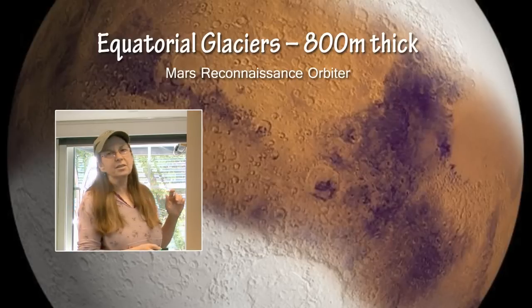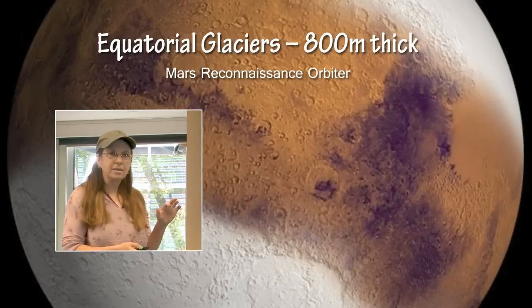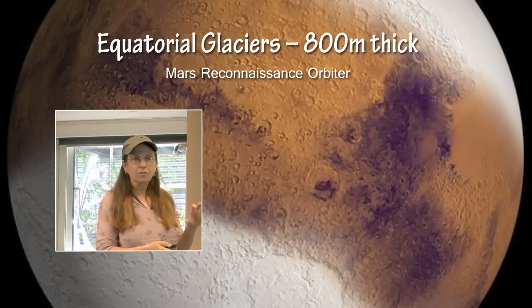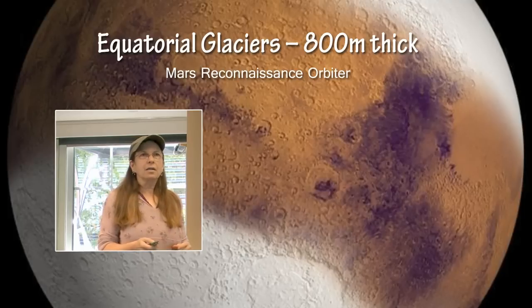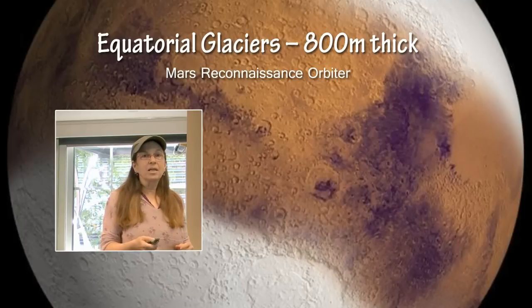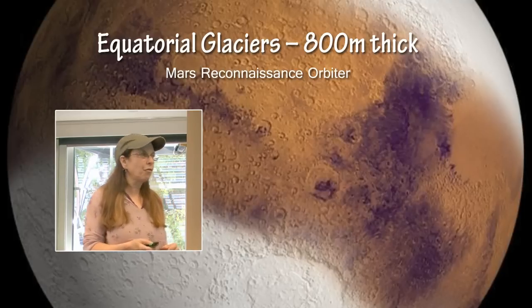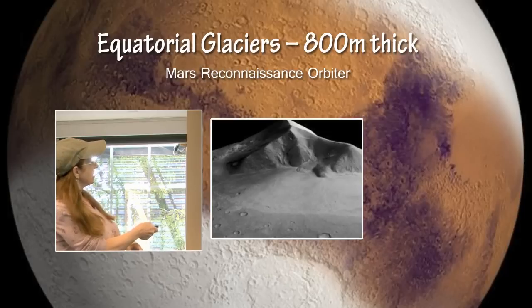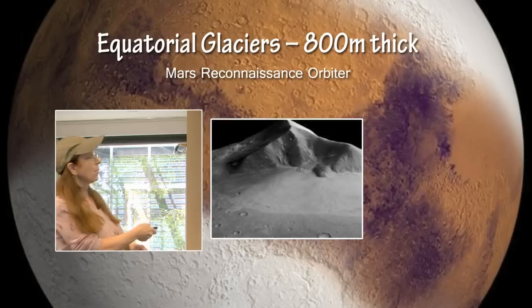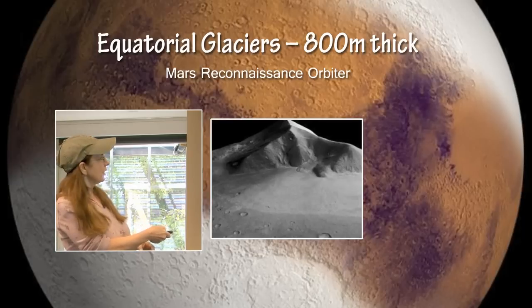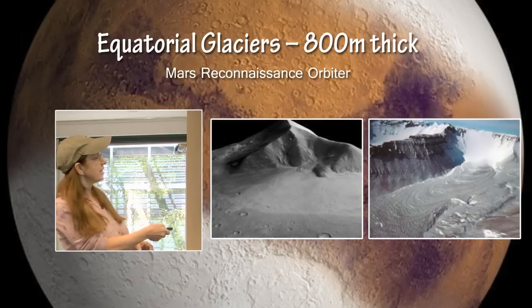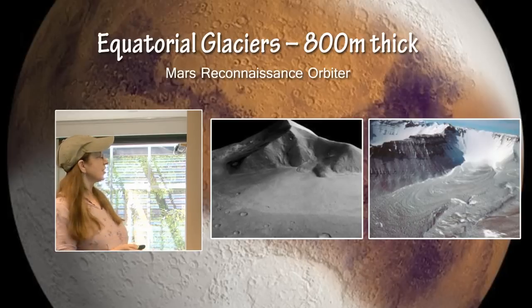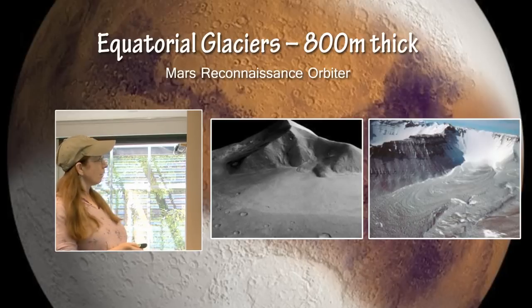The equatorial regions are estimated to have huge subsurface glaciers that are as much as 800 meters thick underneath the surface and produce flow features on the surface of Mars, which are exactly identical to the flow features that we see here on Earth in the Arctic regions as the glaciers move.